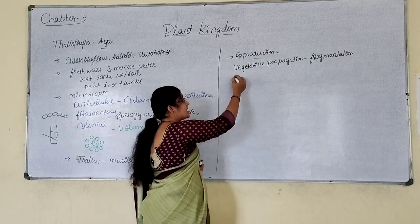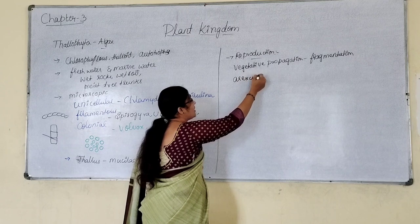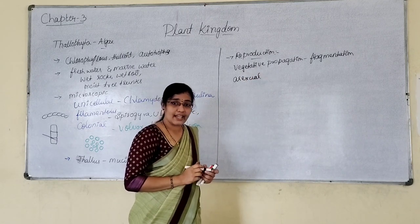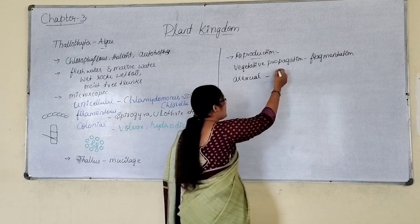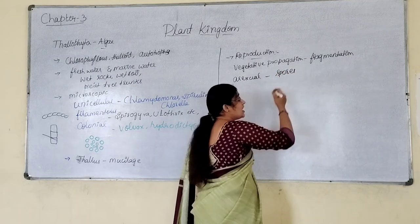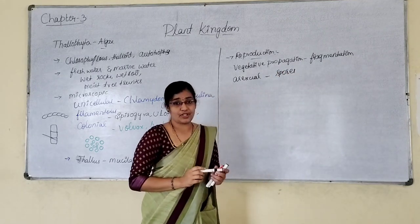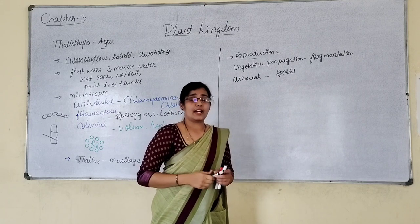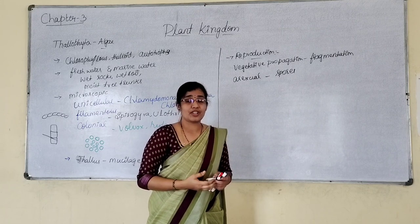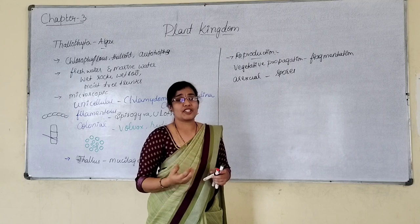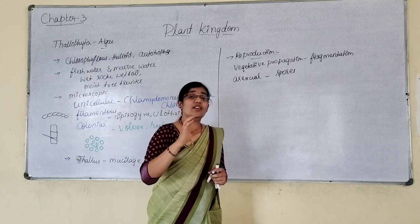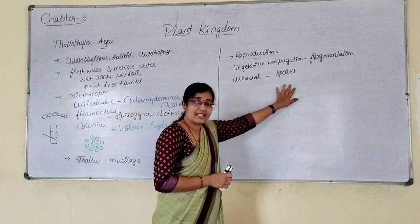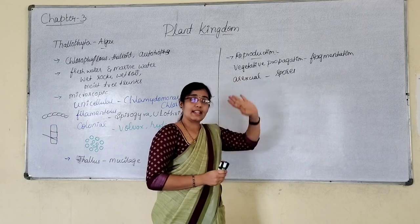Reproduction also takes place by asexual means. Asexual reproduction takes place by the formation of different types of spores. In algae, we come across different types of spores like zoospores, aplanospores, hypnospores, and akinetes — these are all the different types of spores through which asexual reproduction takes place in thallophyta.